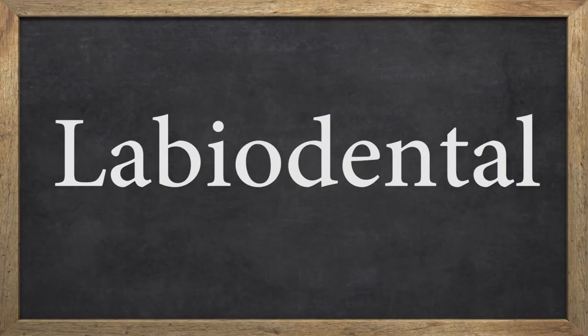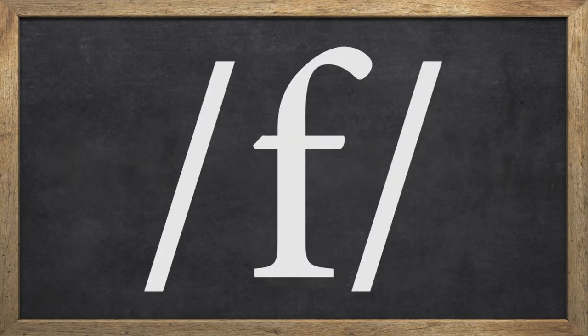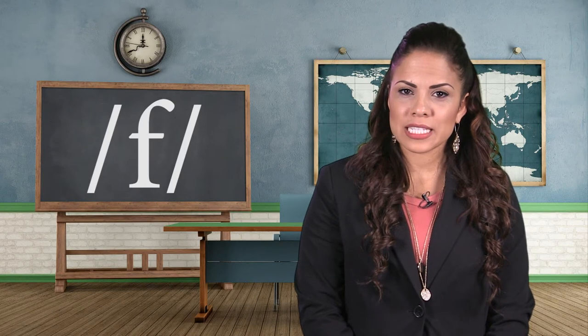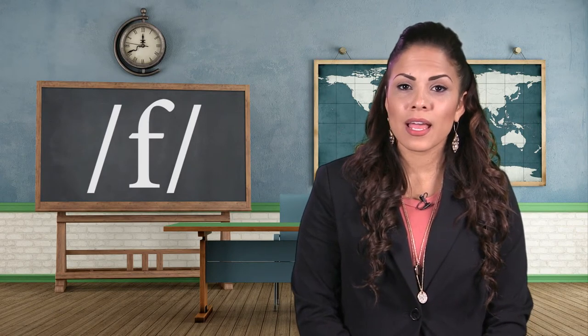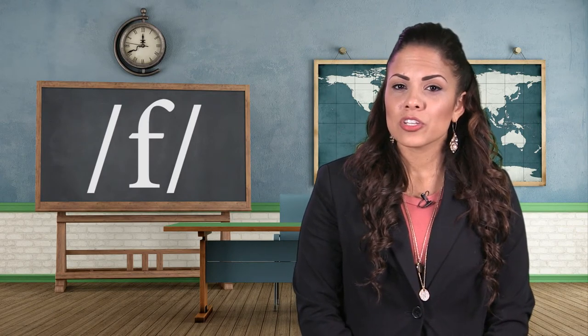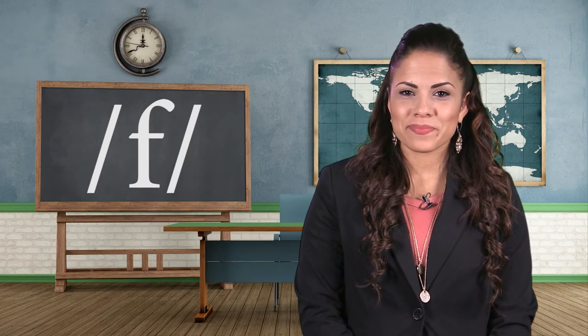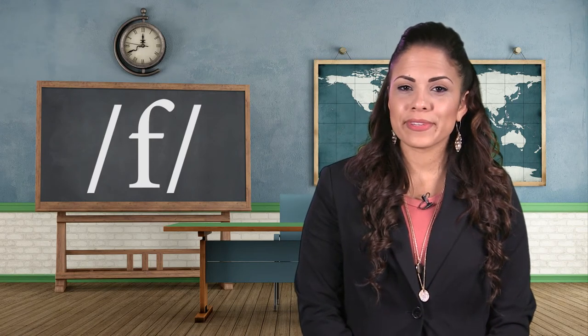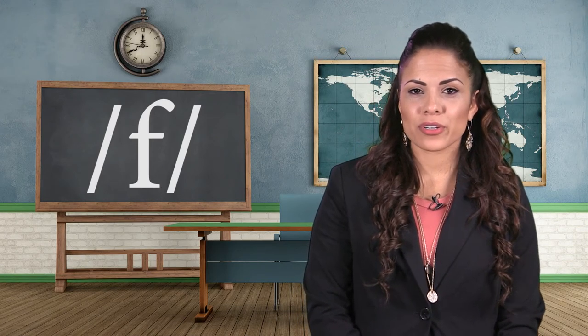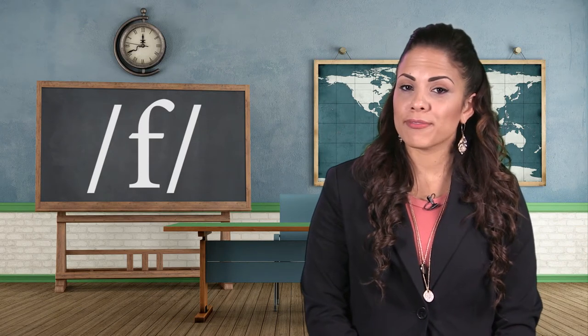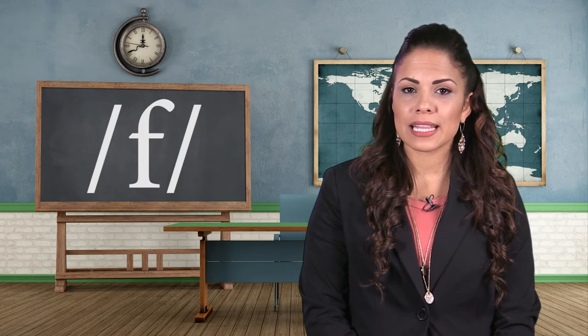The next type of consonant sounds are labiodental. They're produced by putting your upper teeth on your bottom lip and blowing air. The first labiodental sound is /f/. The letter F sounds like /f/. Put your upper teeth on your bottom lip and blow air. Your vocal folds will not vibrate. For example: feel, flower, afloat, afar, leaf.